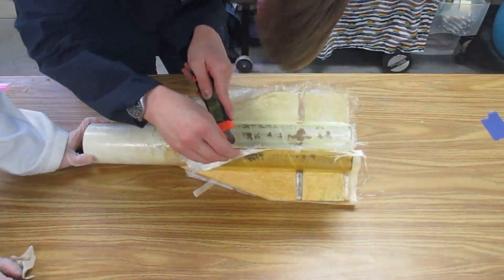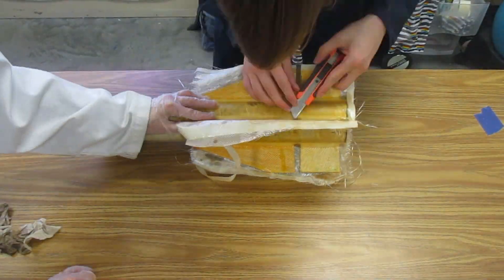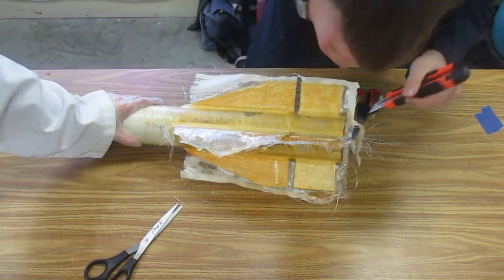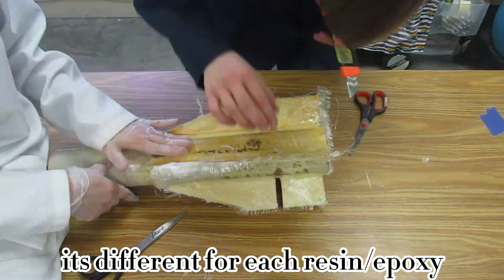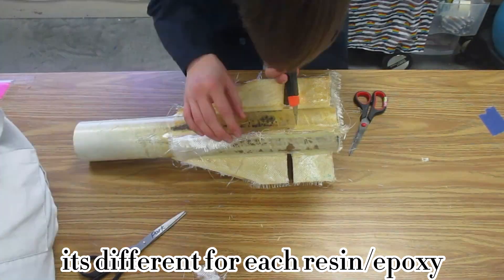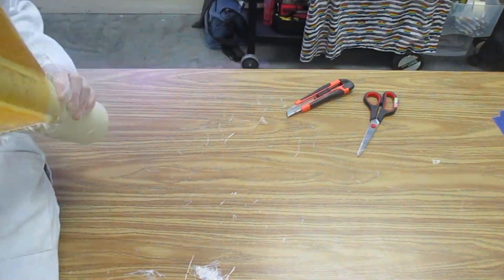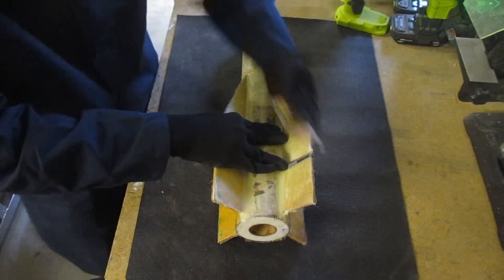Then once all of the resin has cured for about an hour, maybe an hour and a half or two, you want to go back with a knife and cut off the extra. This is called when the resin is being green, and it makes it so that you can cut it with a knife without messing it up, and it makes it way easier to deal with in the end.